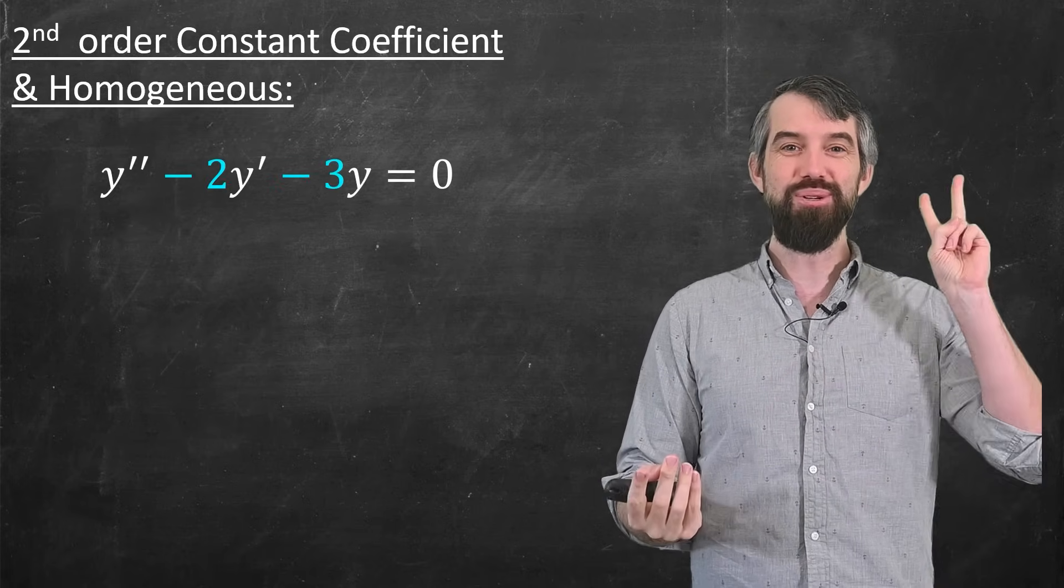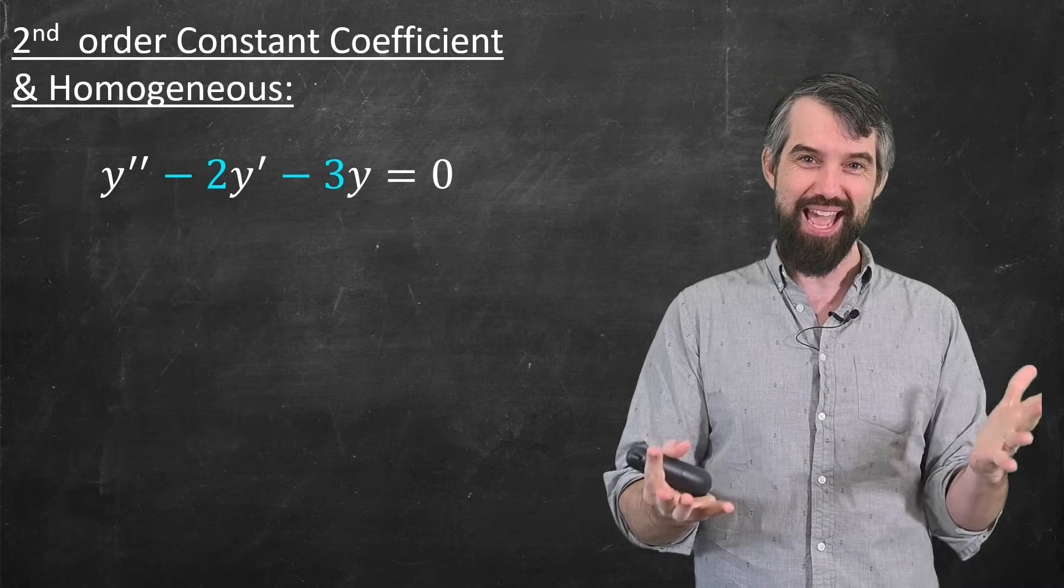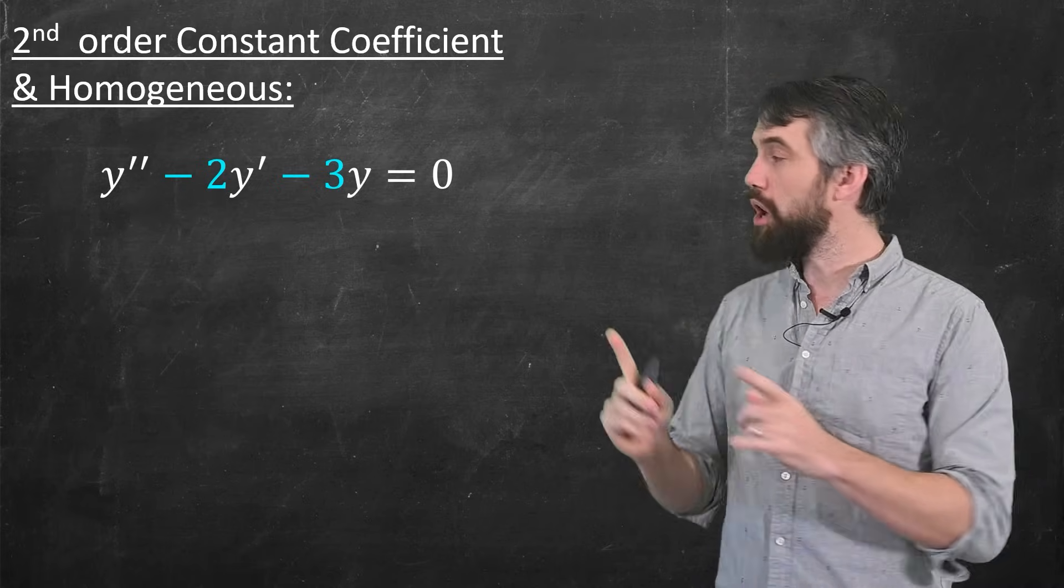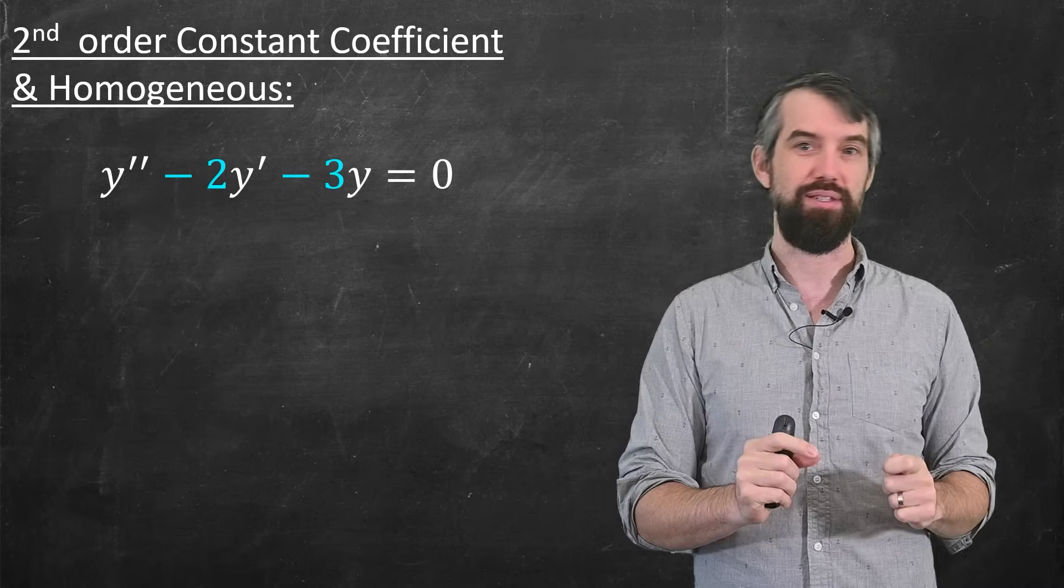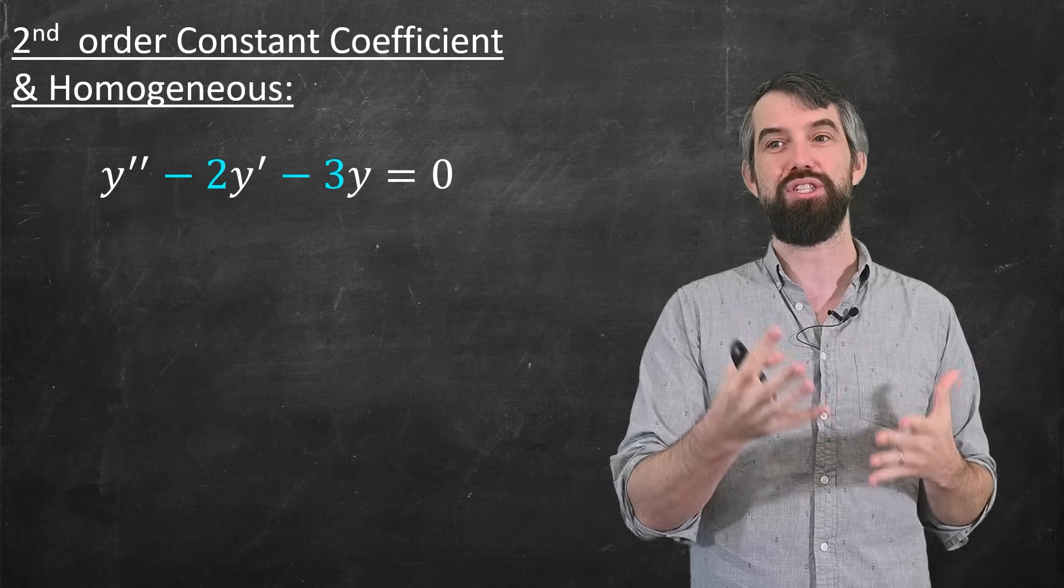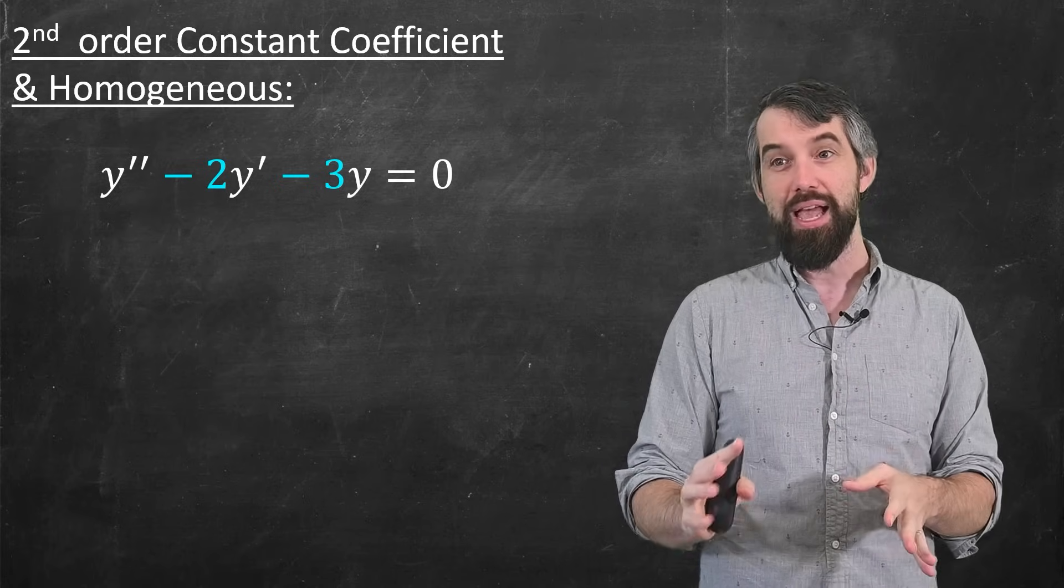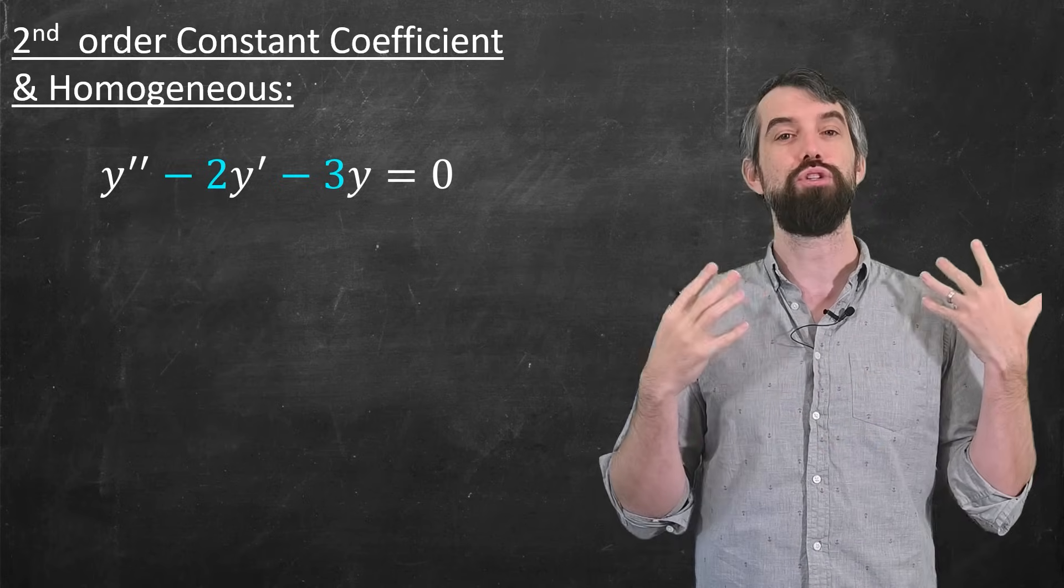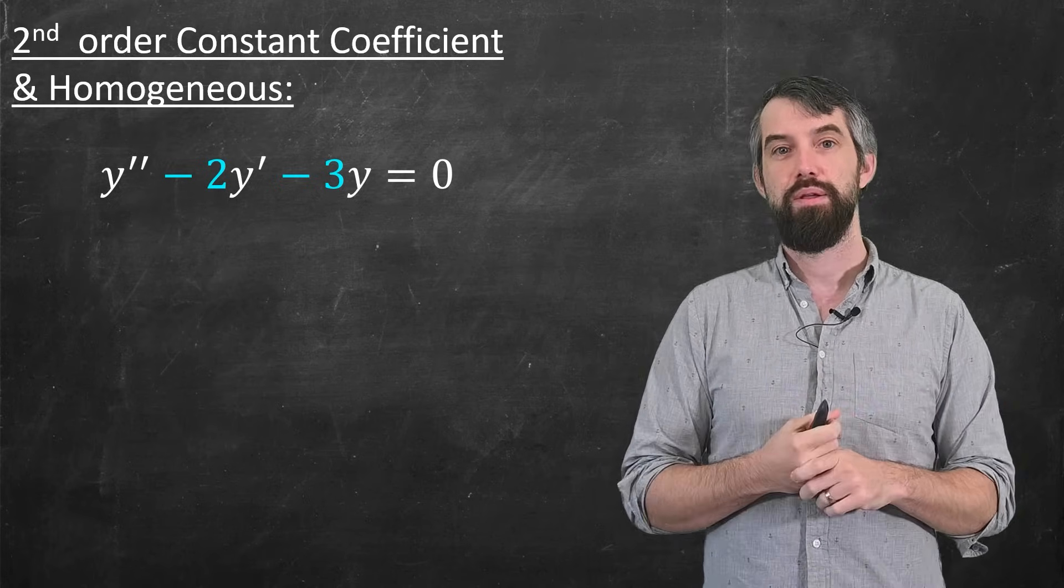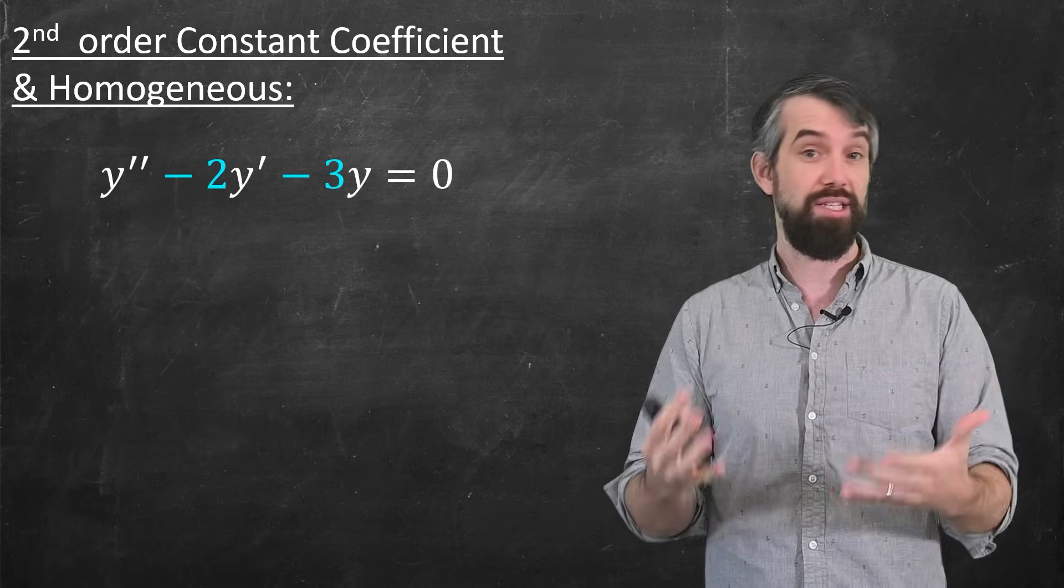Now we can upgrade to second order equation. Yay. And the simplest of those are the constant coefficient ones. So I've got numbers like minus 2 and minus 3, not functions of x. And that is homogeneous, so it's equal to 0 on the right-hand side.